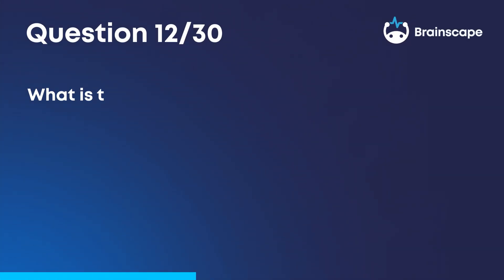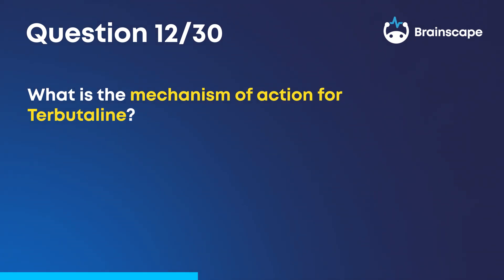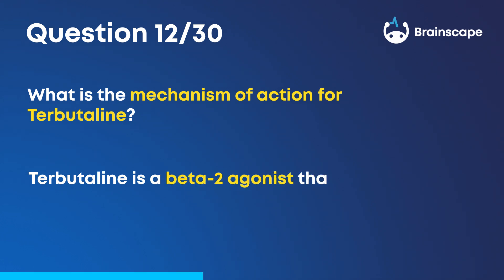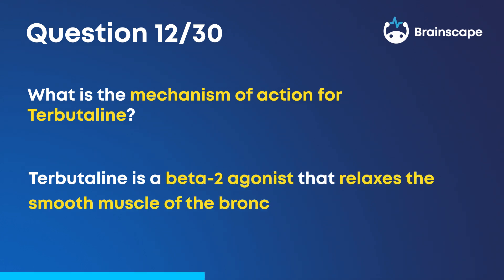Question 12. What is the mechanism of action for terbutaline? Terbutaline is a beta-2 agonist that relaxes the smooth muscle of the bronchioles.